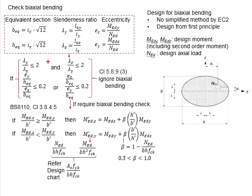As you see from the terminology here, for the biaxial bending check to be ignored, both this and this must be fulfilled, and either one of this and this needs to be fulfilled. It is basically checking regarding the slenderness ratio as well as the eccentricity.